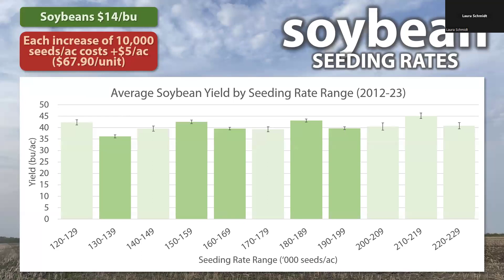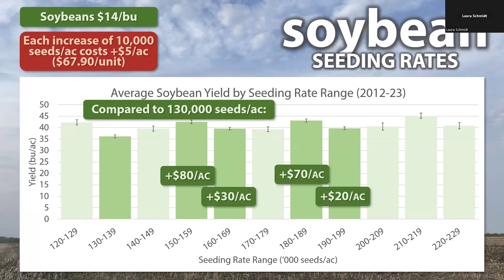Highlighted are specifically the yield averages where there's been more than 20 trials tested, so we have a lot of confidence in these comparisons. Comparing seeding rates of 150 to 190,000 seeds per acre to a lower seeding rate of 130,000 seeds — assuming a $68 per unit cost and soybeans selling for about $14 — on average these yield increases are large enough to more than pay for the increased seed cost and improve profitability by $20 to $80 per acre, with the greatest return occurring at 150 or 180,000 seeds per acre. So there's an economic benefit to maintaining at least 150,000 seeds per acre, especially since we end up with a more resilient plant stand compared to dropping that seeding rate lower.